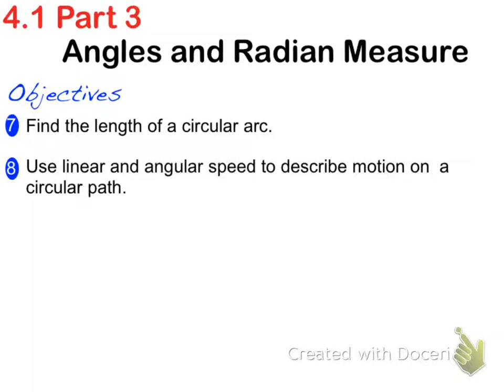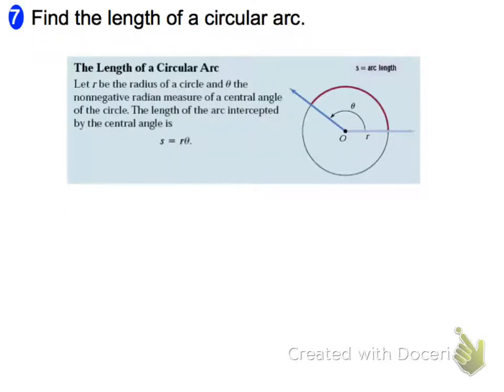This is section 4.3, part 3, and today we're talking about angles and radian measure still. We're going to focus today on arc length, and also the linear and angular speed to describe motion around a circle. So the first objective, objective 7.